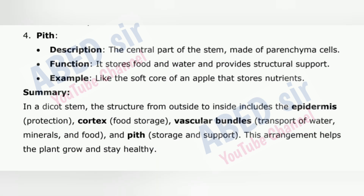4. Pith — the central part of the stem, made of parenchyma cells. Function: it stores food and water and provides structural support. Example: like the soft core of an apple that stores nutrients. Summary: In a dicot stem, the structure from outside to inside includes the epidermis for protection, cortex for food storage, vascular bundles for transport of water, minerals and food, and pith for storage and support. This arrangement helps the plant grow and stay healthy.